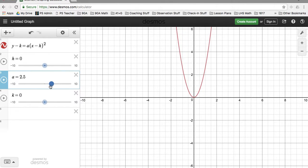And as a goes back to 1, it goes to the normal basic graph. And then when it gets less than 1, the parabola starts getting wider.